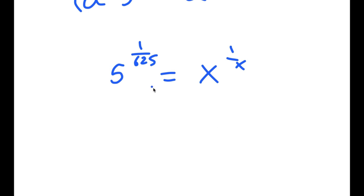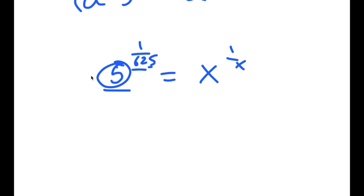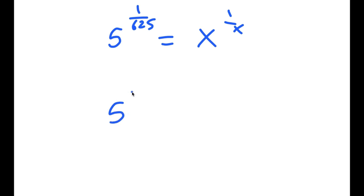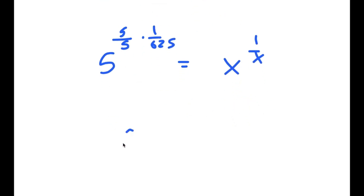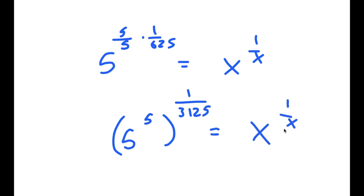From here, I want to change my left-hand side so that it's in the form: a number to the power of 1 over that same number — to align with x to the power of 1 over x. Right now they're different. So I'm going to rewrite this as 5 to the power of 5 over 5, times 1 over 625. So now I get 5 to the power of 5, to the power of 1 over 3125, is equal to x to the power of 1 over x.